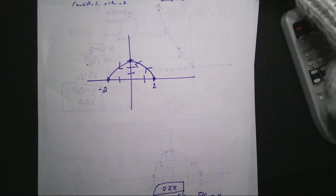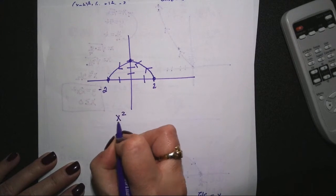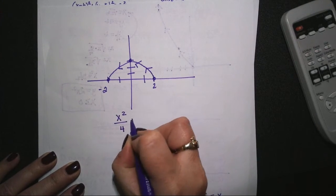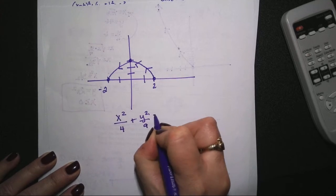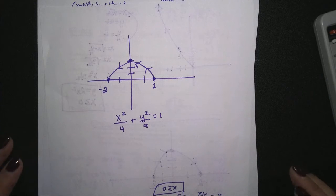So hopefully we all came up with a good graph, yes? Now, go back to your rectangular equation. We came up with x squared over 4 plus y squared over 9 equals 1. That's the rectangular form I got.